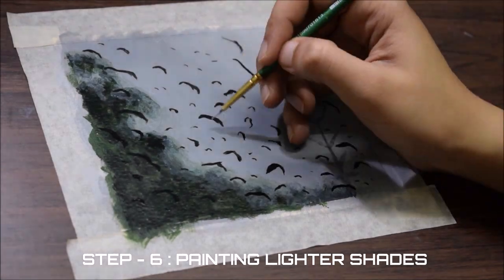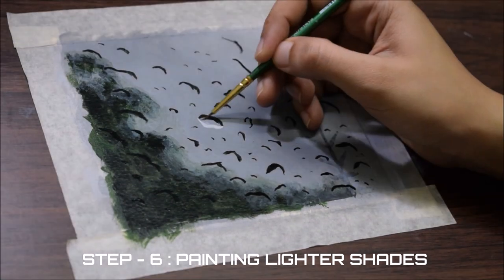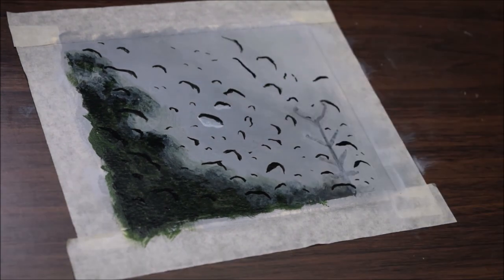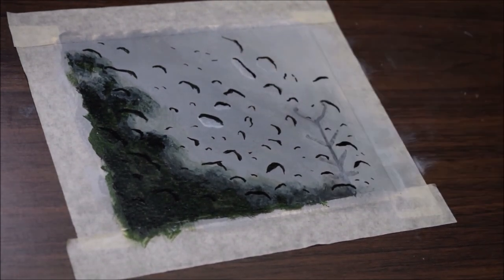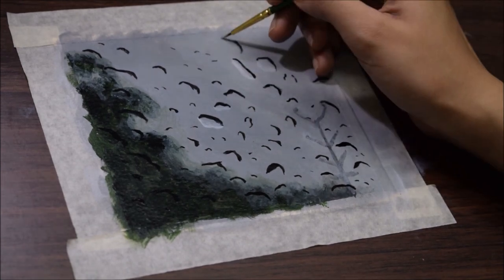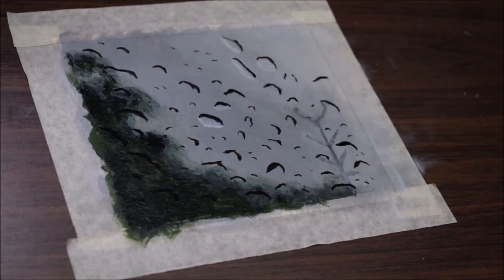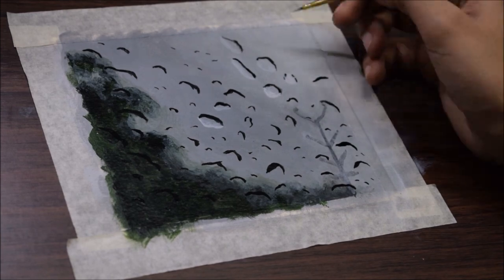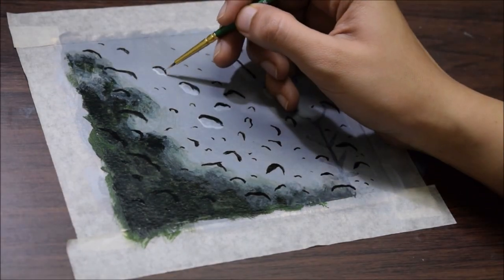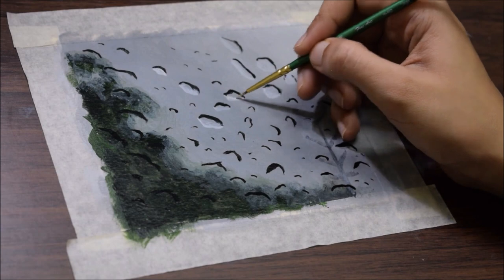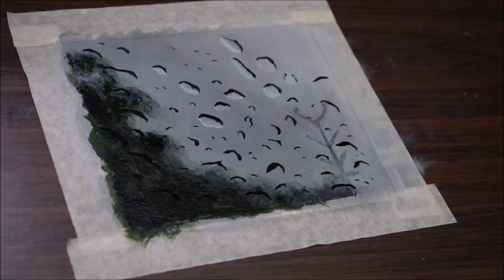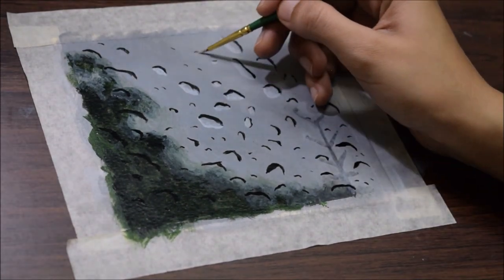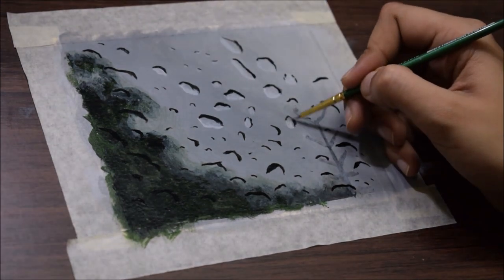Step number 6. Now, with diluted white, we will add the lighter part in the droplets. The idea to paint it correctly is to draw the outline and then blend it inwards. Complete this process with all the black outlines we have painted previously.